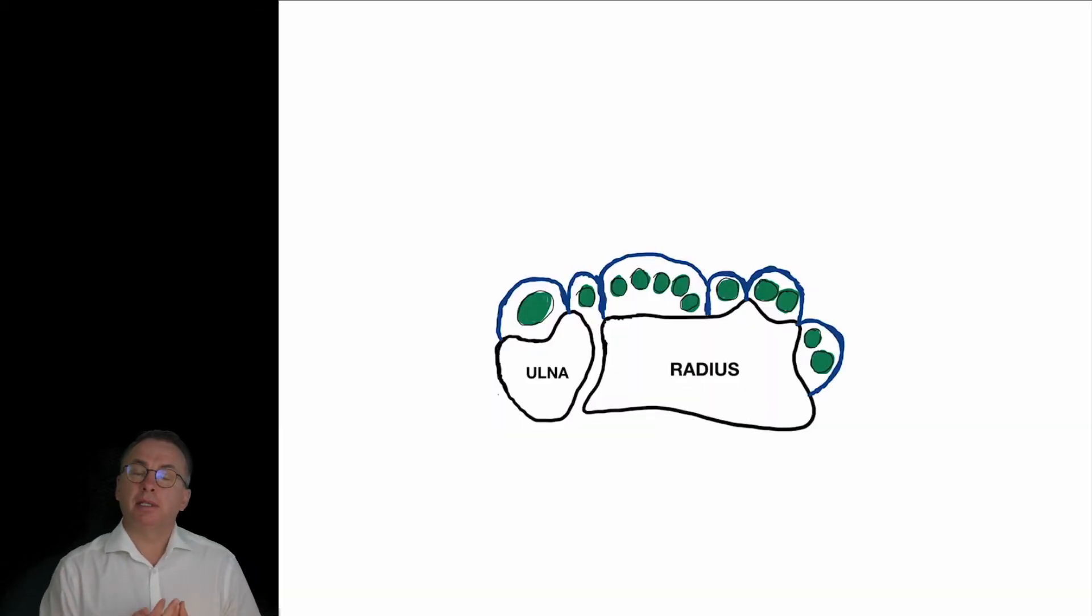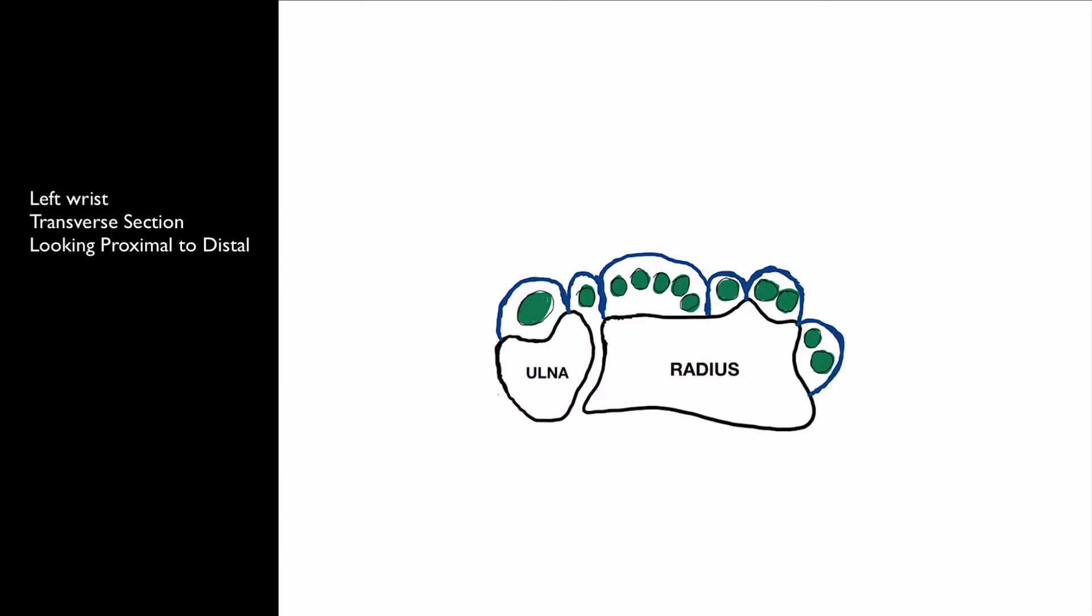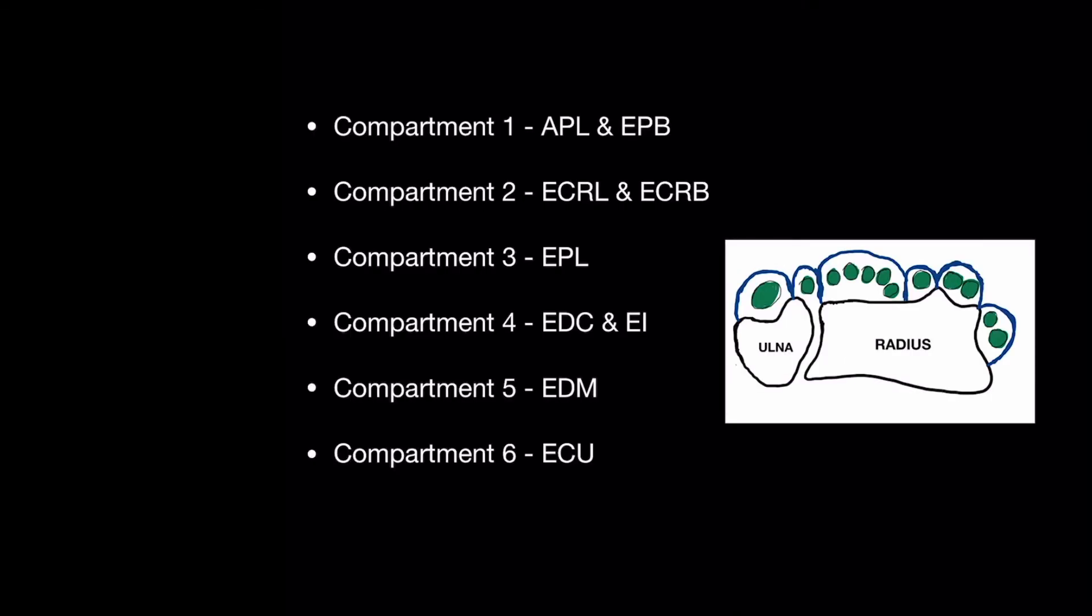This diagrammatic representation shows the extensor tendons passing across the dorsal wrist underneath the retinaculum. The retinaculum is divided up into six compartments. From radial to ulnar here, compartment 1, 2, 3, 4, 5 and compartment 6.